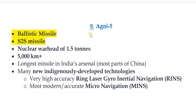Agni 5 is a ballistic missile — a surface-to-surface missile. It can carry a nuclear warhead of 1.5 tons and has a range of 5,000 km and beyond. It is the longest-range missile in India's arsenal and can cover most parts of China. It incorporates indigenously developed technologies including a ring laser gyro inertial navigation system (RINS) and a micro inertial navigation system (MINS).